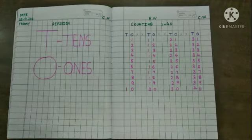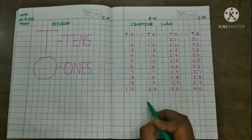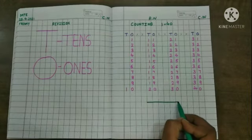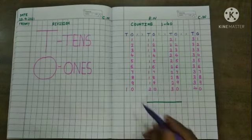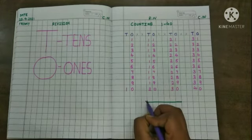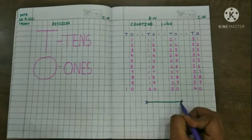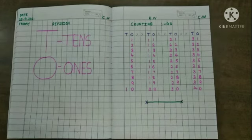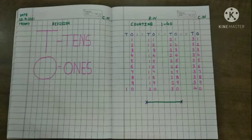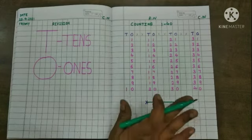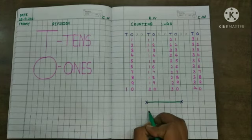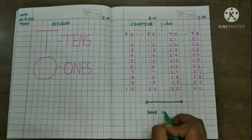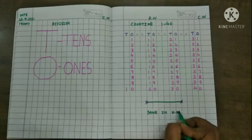Now after completing the counting, you draw a sleeping line. Then draw a cross mark before the sleeping line and after the sleeping line. And students, you just do the same work in your homework also. Same in H.W. H.W means students, homework. Thank you students.